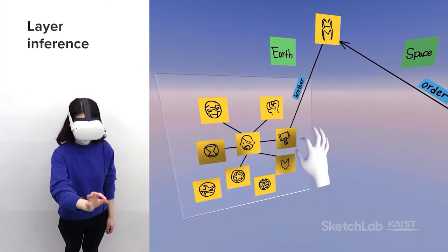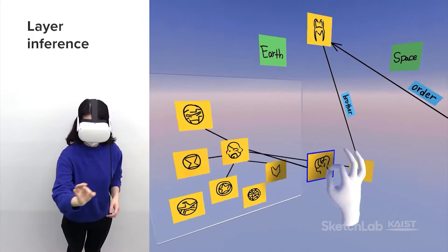Soon after, Thor travels to a distant planet with Hulk and they form a new group. A layer is automatically created when nearby notes are on the same plane.